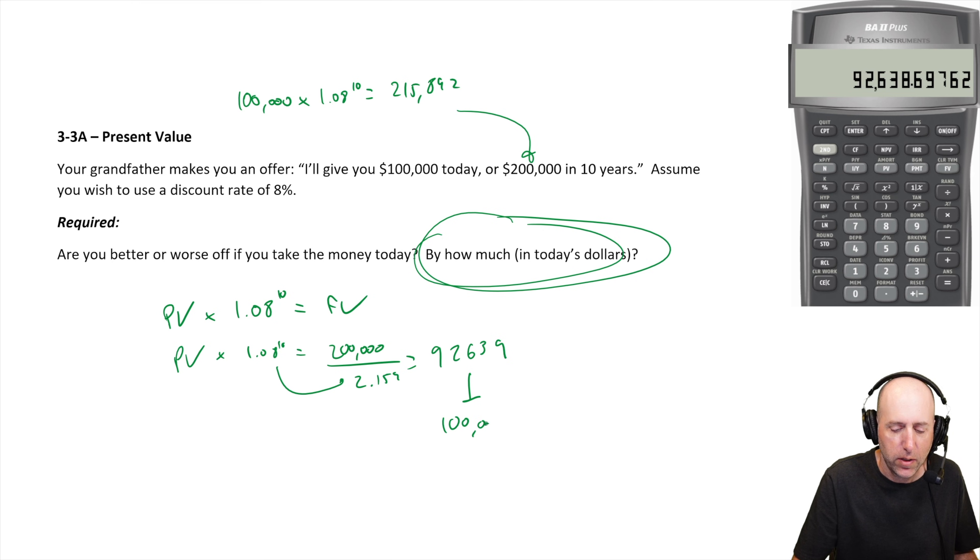I'm being offered $100,000 today, or I can take something that's worth $92,000 today. I should obviously take the $100,000. Now, what's the difference?